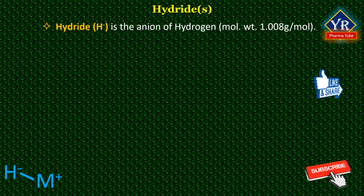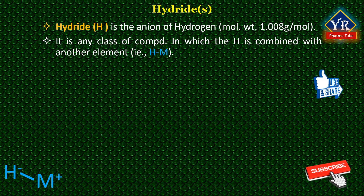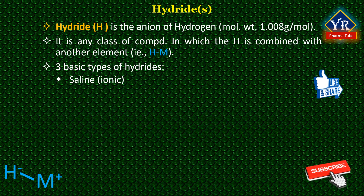Hydride in chemistry is said to be an anion of hydrogen, i.e. H⁻, and its molecular weight is 1.008 grams per mole. Hydride is any class of chemical compound in which hydrogen is combined with another element. Three types of hydrides are saline or ionic hydrides, metallic hydrides, and covalent hydrides.